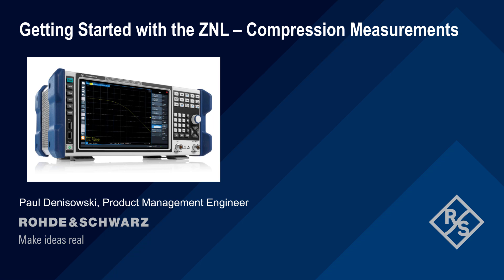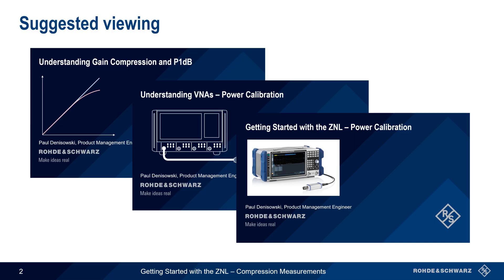Hello, and welcome to this presentation: Getting Started with the ZNL Compression Measurements. In this presentation, we'll show how to make gain compression and P1dB measurements using a Rohde & Schwarz ZNL Series Vector Network Analyzer. This presentation assumes a basic understanding of gain compression measurements, and also assumes that you're familiar with power calibration and how to perform power calibration on the ZNL. Separate presentations are available if you'd like a short introduction or review of any of these topics.